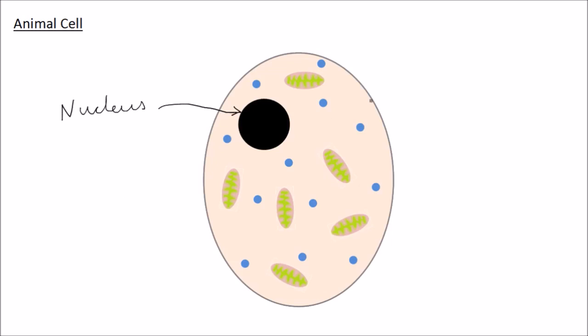The next thing that animal cells have is cytoplasm. The cytoplasm is a liquid gel where most chemical reactions take place. Next we have the cell membrane. The cell membrane controls the passage of substances into and out of the cell, so it basically controls what can enter the cell and what can exit the cell.